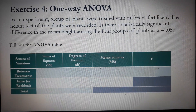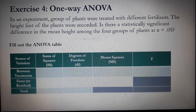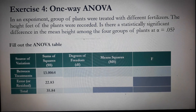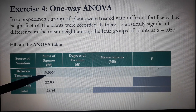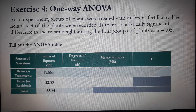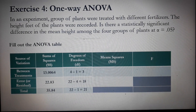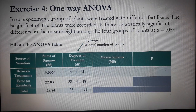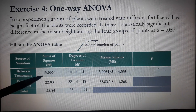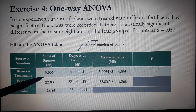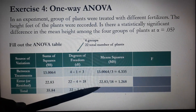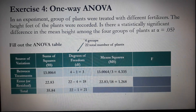Now let's complete the ANOVA table. The SSB is 13.0064 and SSE is 22.83; adding them gives SST = 35.84. For degrees of freedom, we have 4 groups and 22 total plants. The MSB is 13.0064 divided by 3, which equals 4.335. The MSE is 22.83 divided by 18, which equals 1.268.